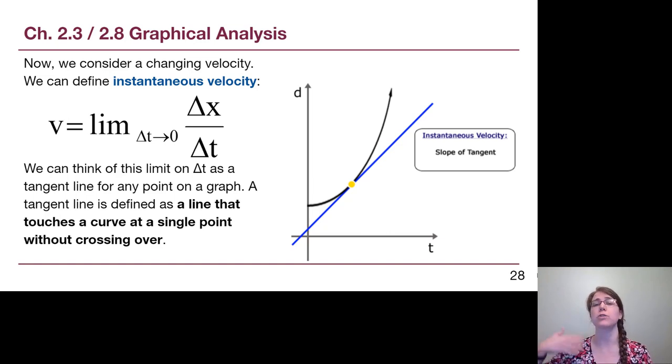Now the official physics equation for that idea is that what we're looking for is v as the limit on the change in time goes to zero on that same equation that we've talked about before. Now we're not doing anything with limits in this class. This is starting to get into the ideas of calculus which we don't use in this class. But we can make the connection on how this equation graphically turns into the idea of a tangent line. And if you've never seen a tangent line before we're going to make sure we are all on the same page with that.